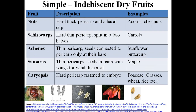Indehiscent dry fruits also have different types: nuts, schizocarps, achenes, samaras, and caryopsis. In nuts, the pericarp is hard and thick and they have a basal cup. Examples are acorn or chestnuts.